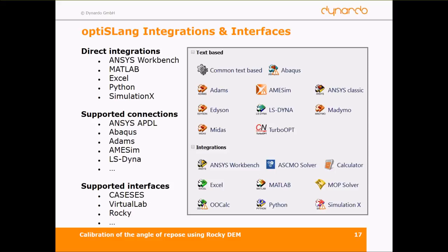We then try to find surrogate models which replace the CAE process so that we can do optimization without using CAE cores, making it quite fast and easy. This is possible with ANSYS Workbench, Abaqus, Matlab, ANSYS APDL, ADAMS, and what I want to show today — Rocky.